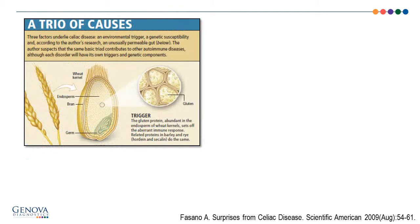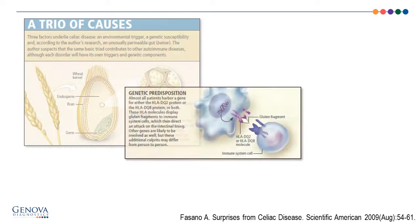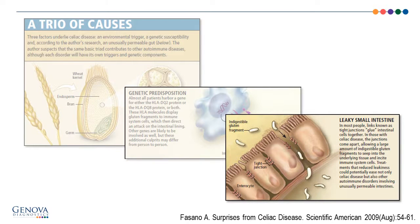In the case of autoimmune disease like celiac, first there's an environmental trigger — in this case the wheat or gluten — and then there's a genetic predisposition. Almost all patients with celiac harbor a gene for either HLA-DQ2 or HLA-DQ8. And finally, intestinal permeability, which allows for the antigens to move through to the underlying tissue and stimulate the immune system.